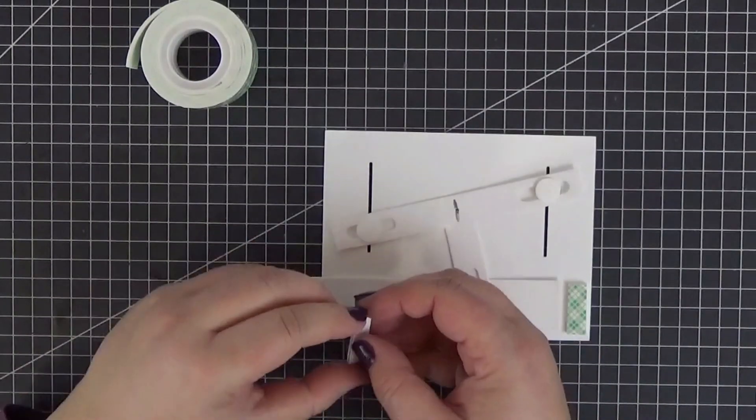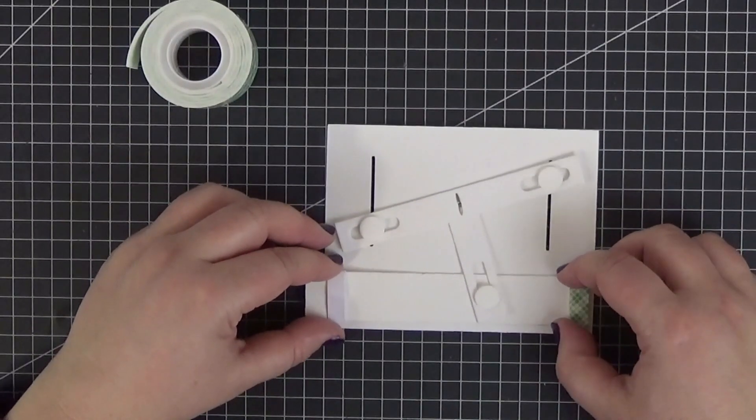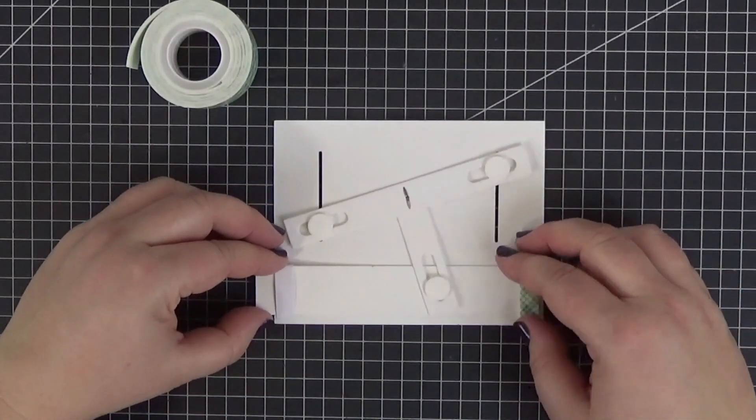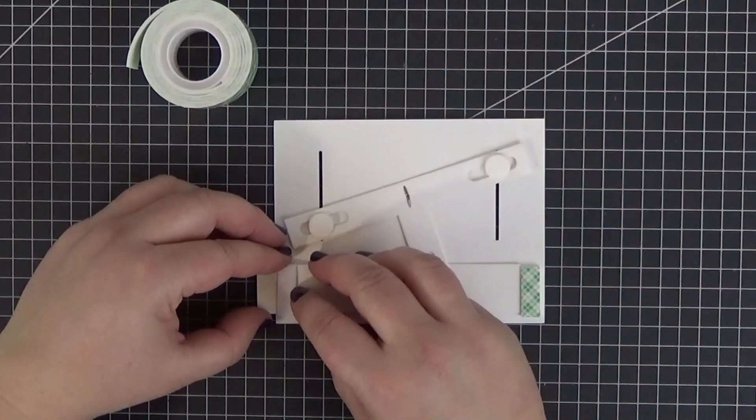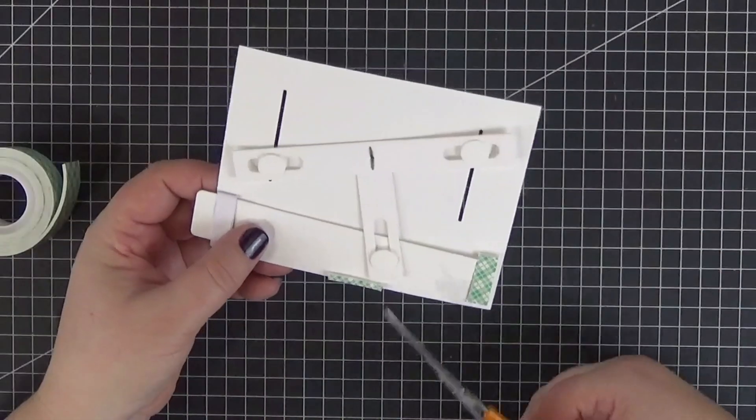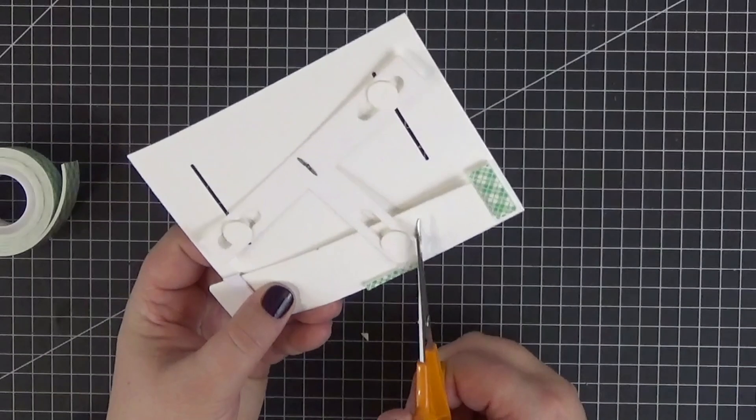Now we can attach the before mentioned sleeve to hold the pull tab in place. We will leave a little bit of room on the lower edge of the card so that we can add a strip of foam to it. This strip will also stop the pull tab from moving vertically too much which could happen due to the nature of the mechanism.